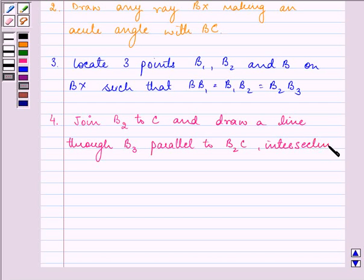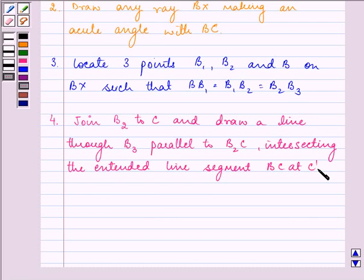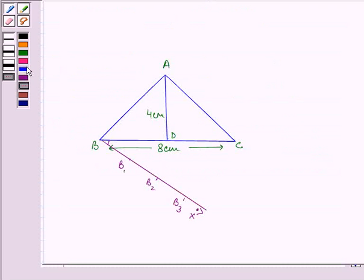Intersecting the extended line segment BC at C dash. So let us join B2 to C first, and now we will extend BC, and we need to now draw a line parallel through B3 intersecting the extended BC at C dash. This is with the help of the compass.